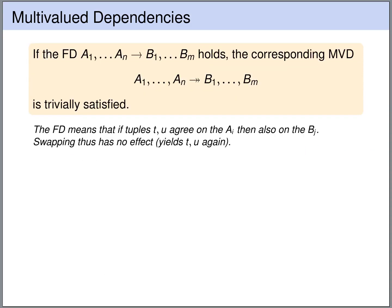Multivalued dependencies are a generalization of functional dependencies. If we have a functional dependency A1 to AN uniquely determines B1 to BM, then the corresponding multivalued dependency automatically holds. The reason is simple: if we consider two rows with the same values for the A attributes, the functional dependency means those A attributes uniquely determine the values for the B attributes. So the two rows must also have the same B values — swapping the B values has no effect, and we trivially still have tuples in the relation.